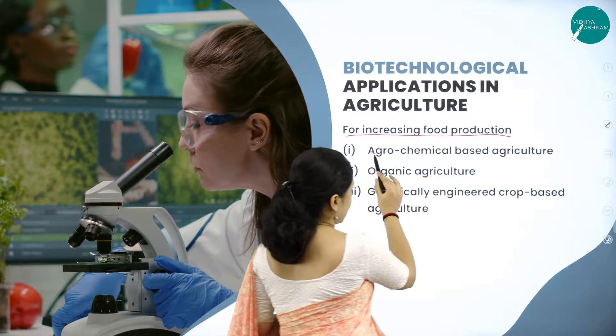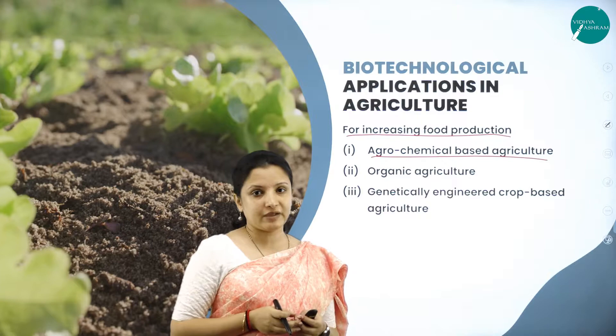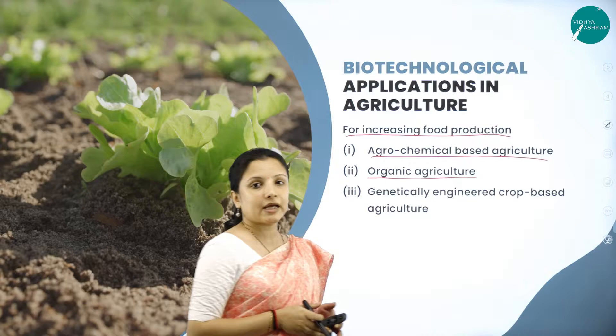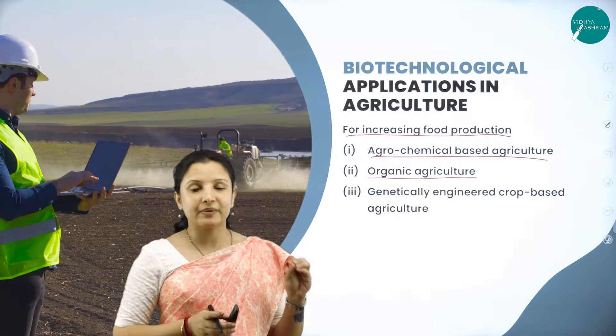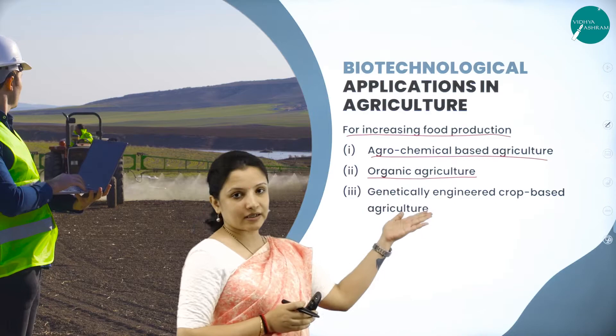Food production can be increased by agrochemical-based agriculture, wherein chemical fertilizers are applied to the field so that the crops can grow well and bring income to the farmers. Next, talking about organic agriculture — in organic agriculture, chemical fertilizers, manures, pesticides, and insecticides are not used. Completely natural biopesticides and bio-fertilizers are used under organic agriculture.